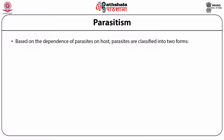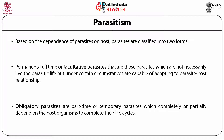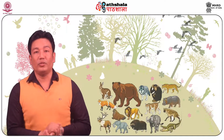Based on the dependence of parasites on the host, parasites are classified into two forms. Facultative parasites are those that do not necessarily live a parasitic life but under certain circumstances are capable of adapting to a parasite-host relationship. Obligatory parasites are part-time or temporary parasites which completely or partially depend on the host organism to complete their life cycles.